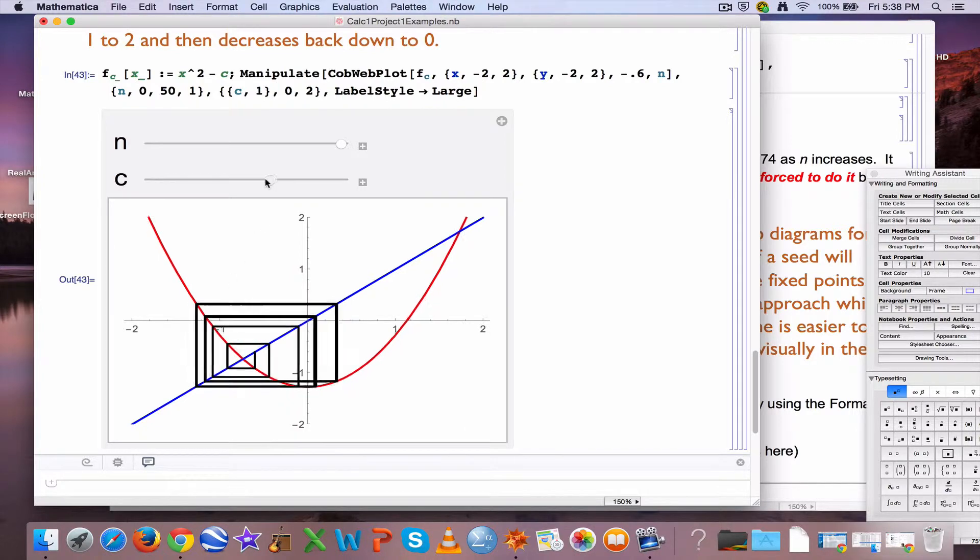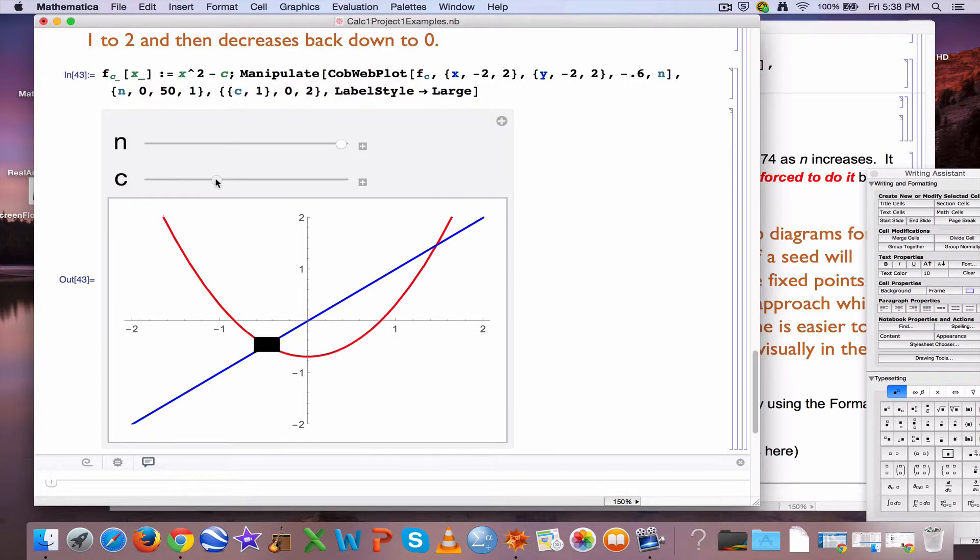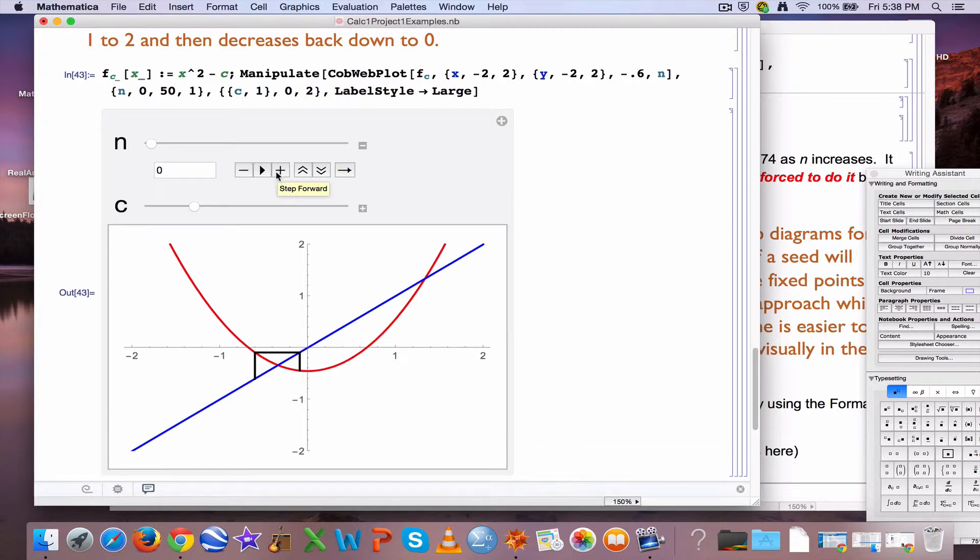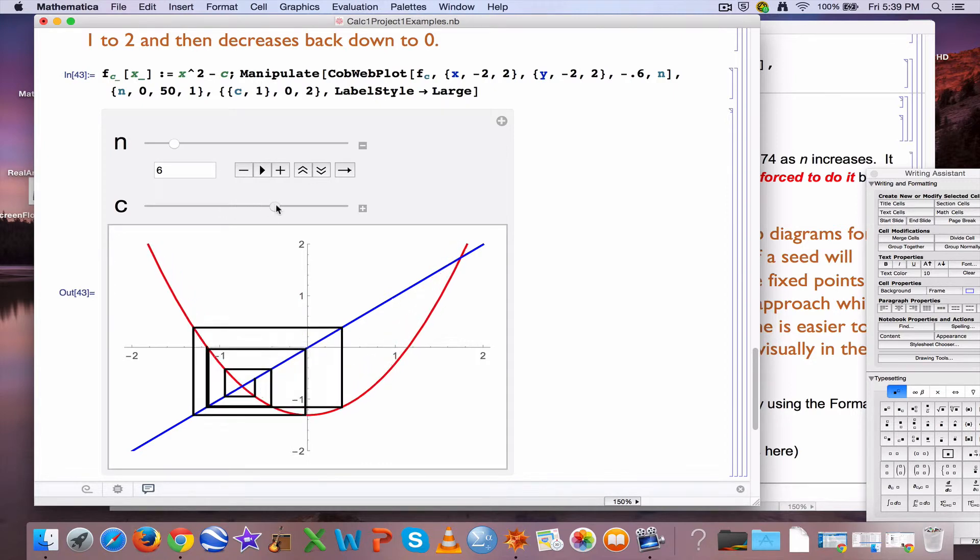As c goes back down towards 0, then it becomes more regular, and in fact becomes an attracting fixed point. Now we're spiraling in toward the fixed point. And if you think about it, it must, whether it's attracting or repelling, it's actually related to the slope of how this red graph crosses the line y equals x. That affects whether it's attracting or repelling. Okay, so lots of interesting things that can happen.